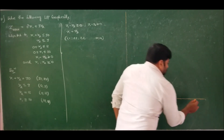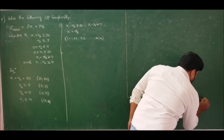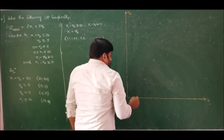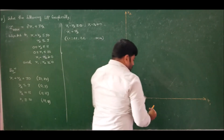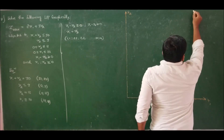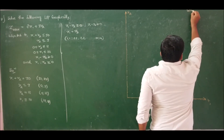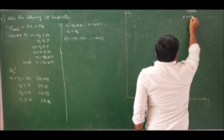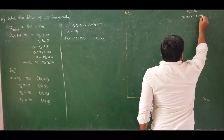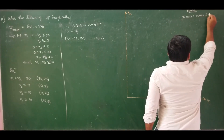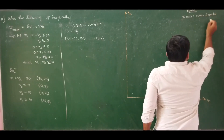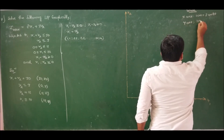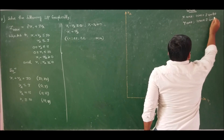The x-axis always represents variable x1 and the y-axis represents variable x2. Since I took this scale, it is good habit to write the scale for all problems. Along the x-axis: 1 cm = 2 units. Along the y-axis: 1 cm = 2 units.